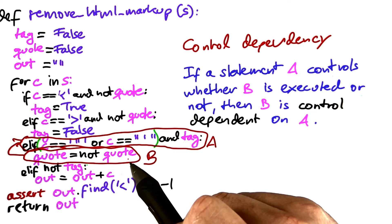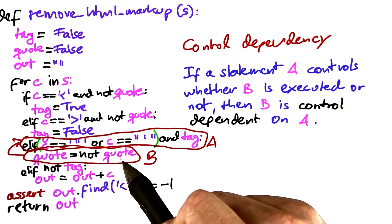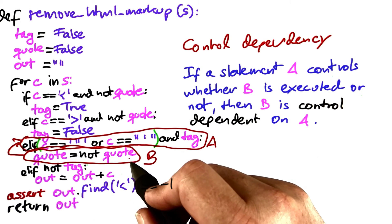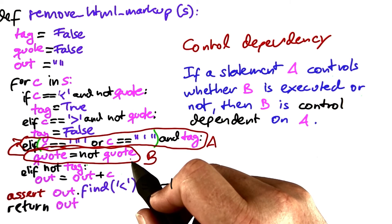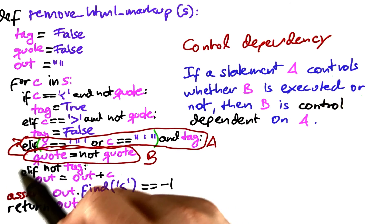Again, such dependencies guide our reasoning. We find that b was executed and we want to know why it was executed after all. And in order to figure out why it was executed, we follow the control dependencies.